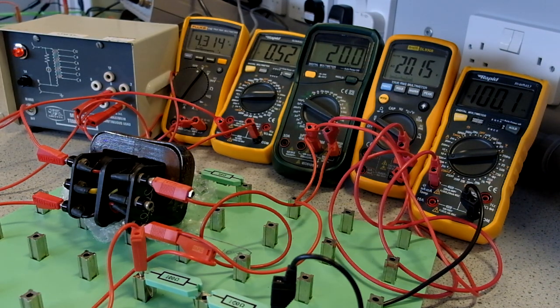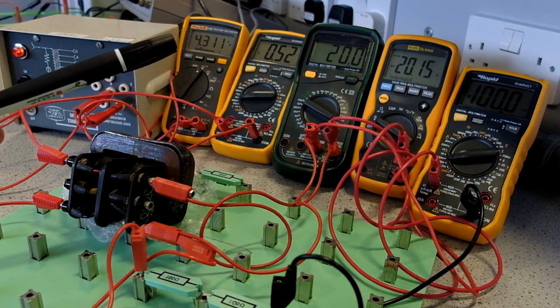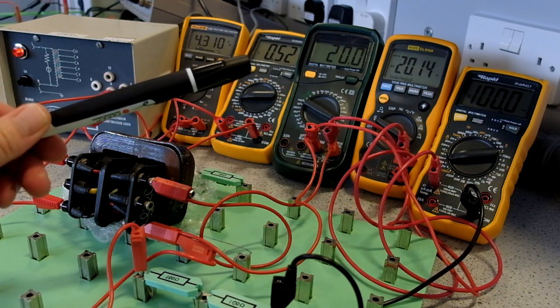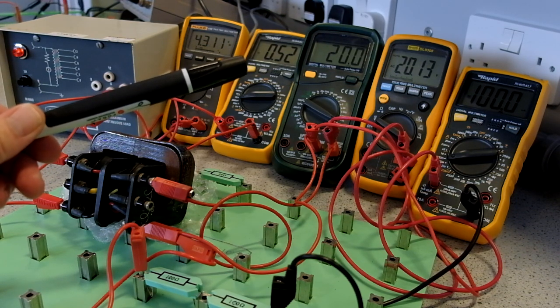What we have going in is, if we look at the meter here, we have 4.3 volts RMS going in. We have a current of 0.52 amps going into the primary.